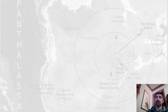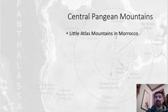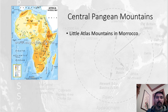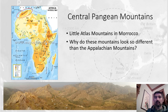Now let's move on to the other side of the Central Pangean Mountains in Africa. These mountains are called the Atlas Mountains in Morocco. If we look at the map of Morocco, here we have the Central Atlas Mountains in that red circle — and this is what they look like. If you look at the Central Atlas Mountains, they look dramatically different than the Appalachian Mountains. That's our last question for today: why do these mountains look so different than the Appalachian Mountains?